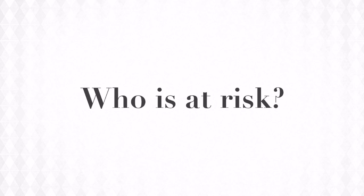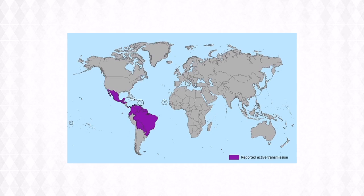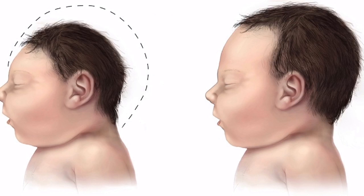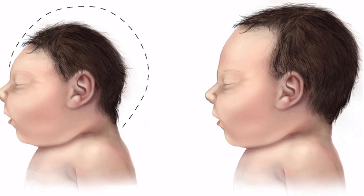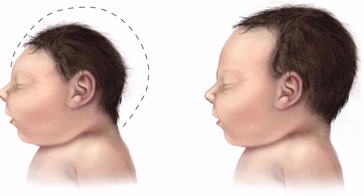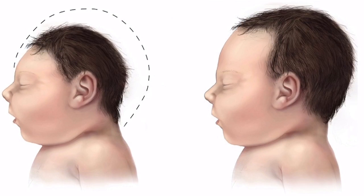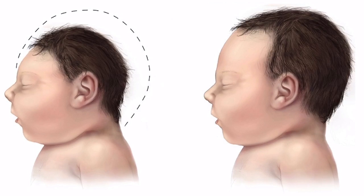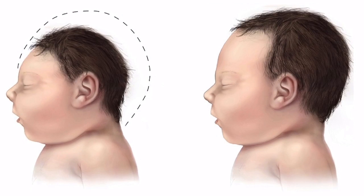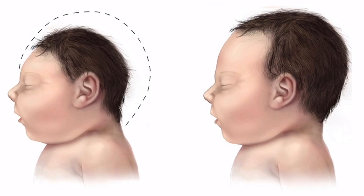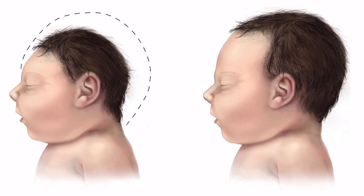Who is at risk of being infected? Anyone who is living in or traveling to an area where the virus is found, who has not already been infected with the virus, is at risk of infection, including pregnant women. There have been reports of a serious birth defect of the brain called microcephaly — a condition in which a baby's head is smaller than expected when compared to babies of the same sex and age — and other poor pregnancy outcomes in babies of mothers who were infected with Zika virus whilst pregnant.